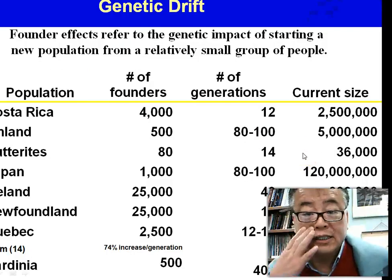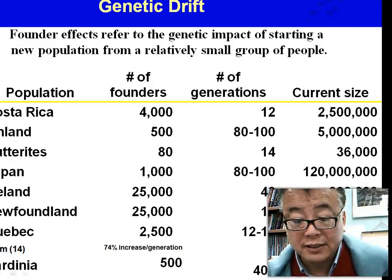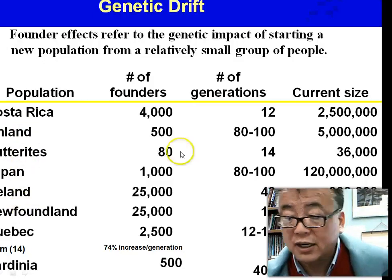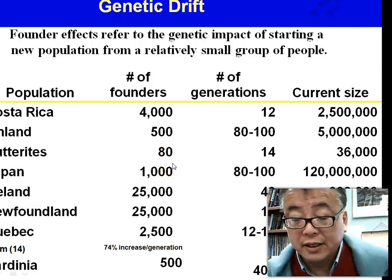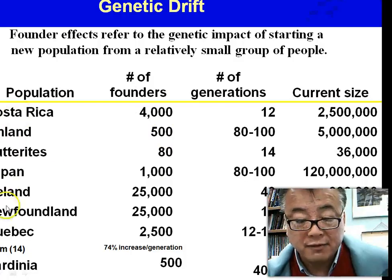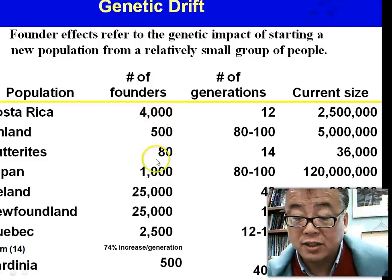There are examples of the genetic drift concept across different populations: Costa Rica, Finland, Honduras, Japan, Iceland, Newfoundland, Quebec, and Sardinia. These current populations were actually founded by a small number of individuals. Finland, for example, was founded with 500 people. After close to 100 generations, we have a current size of 5 million people.